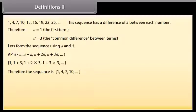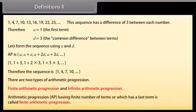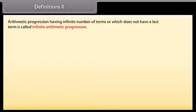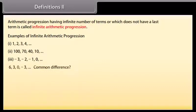This gives the sequence 1, 4, 7, 10, and so on. There are two types of arithmetic progression: finite and infinite. A finite AP has a finite number of terms and a last term. An infinite AP has an infinite number of terms and no last term. Here are some examples of infinite arithmetic progressions. Look at this sequence — can you tell its common difference? Yes, it is minus 3.